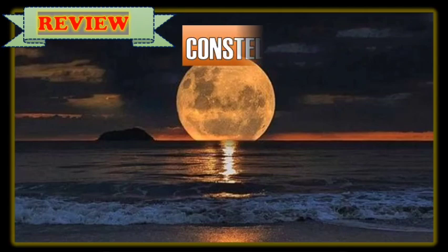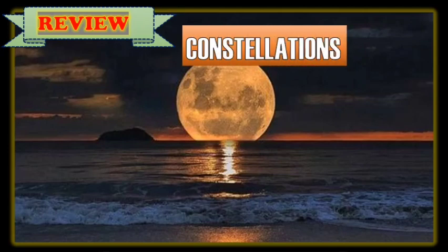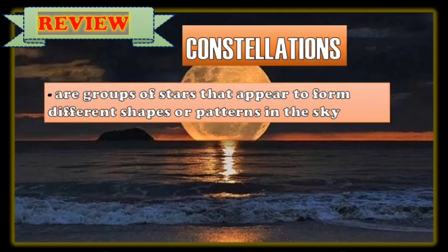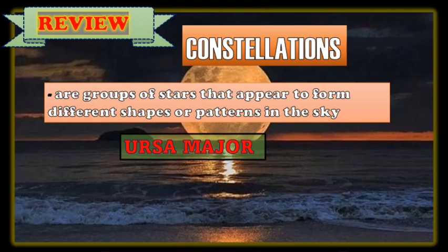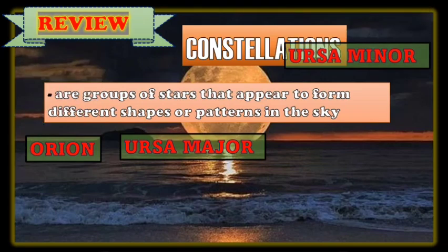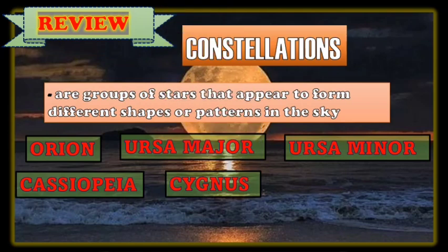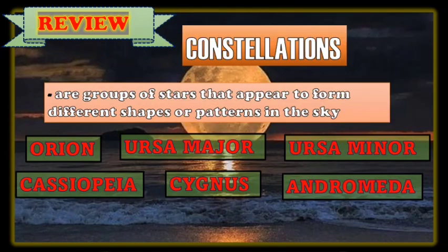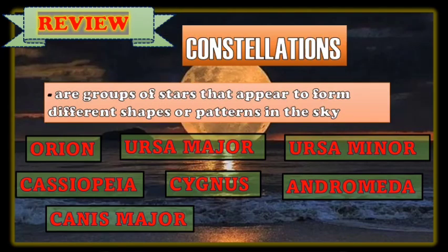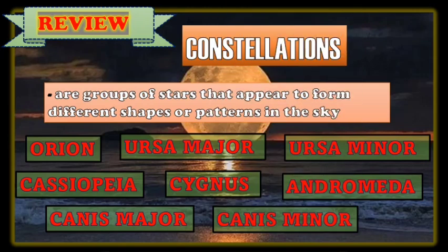Last meeting we discussed constellations, which are groups of stars that appear to form different shapes or patterns in the sky. The examples we discussed include Ursa Major, Orion, Ursa Minor, Cassiopeia, Sinus, Andromeda, Canis Major, and Canis Minor.